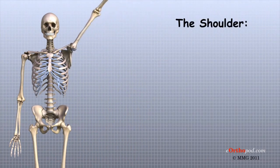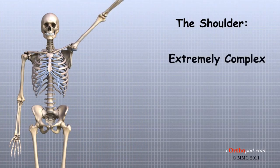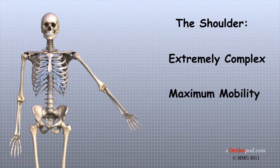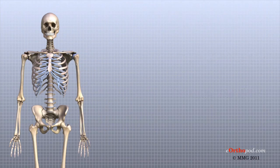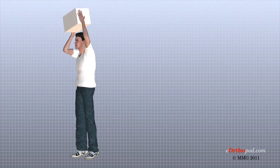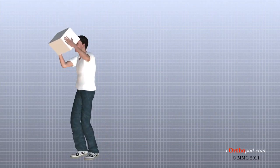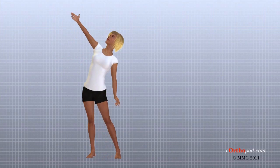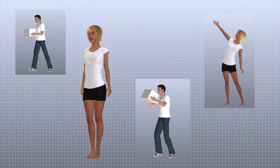As you can see, the shoulder is extremely complex with a design that provides maximum mobility and range of motion. Besides big lifting jobs, the shoulder joint is also responsible for getting the hand in the right position for any function. When you realize all the different ways and positions we use our hands every day, it is easy to understand how hard daily life can be when the shoulder isn't working well.